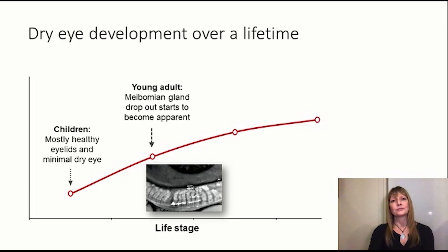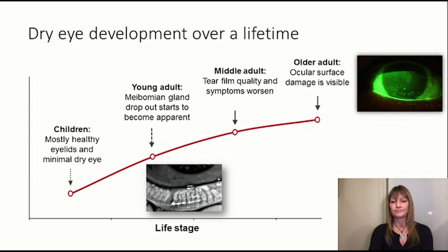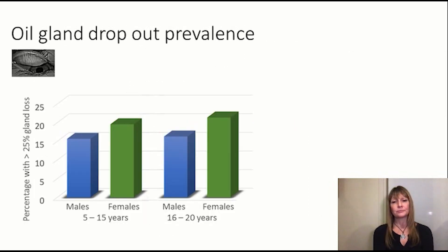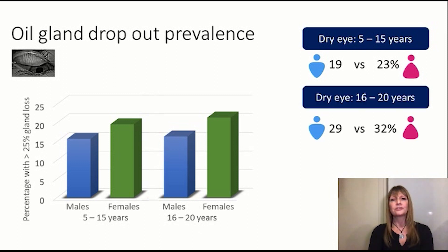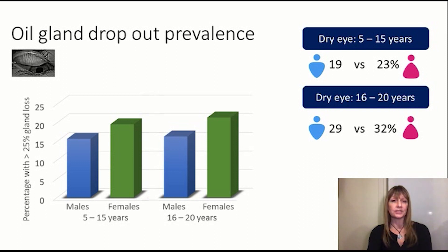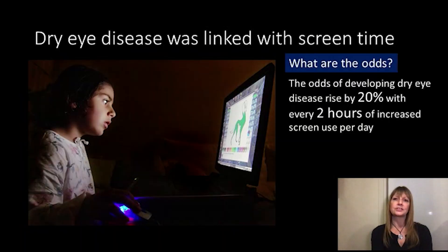When the oil glands are lost, the tear film quality becomes increasingly poor, leading to debilitating symptoms and ultimately damage to the eye surface. Our data from the Royal Society confirmed high rates of dry eye in young individuals. Dry eye disease was found to be more common in females, present in around 20% of those under the age of 16, and around 30% of those aged between 16 and 20. More than one quarter of the eyes' normal glands were missing in over 18% of the younger age group, rising to around 20% of those aged between 16 and 20.